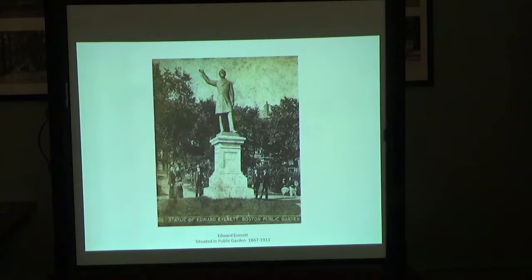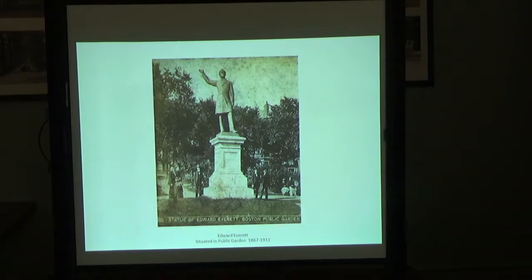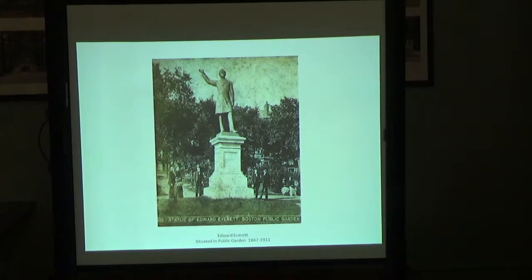Edward Everett had died in 1865 and his friends said, we need a sculpture of him and it should go in the public garden. But from the outset it was pretty much laughed at — it was done in a style that was already out of date when it went up, and was vastly overscaled. The big joke was, it looks like he's hailing a cab. He was removed from the public garden in 1911 and now is in Everett Square in Dorchester, which was his birthplace. But that was our first sculpture.